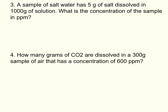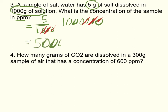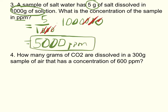For number three: we have 5 grams of salt and 1,000 grams of solution, and we want to find the PPM. So it's 5 divided by 1,000 times one million. Cancel zeros — you're left with 5 times 1,000 divided by 1, which is 5,000 PPM — final answer.